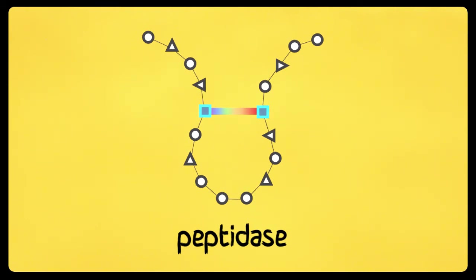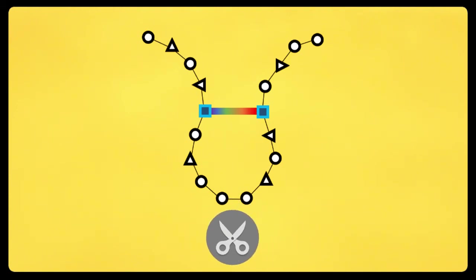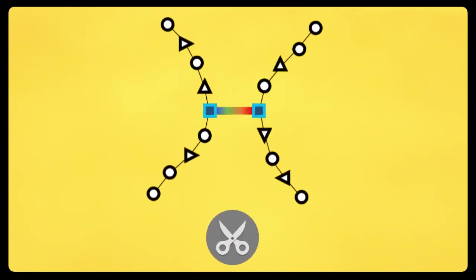So when both the peptide and peptidase are produced together, the enzyme snips the loop in the chain, completing the formation of a star-shaped peptide.